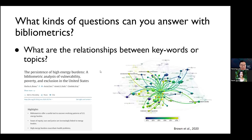Another question you might ask with bibliometrics is: what are the relationships between keywords or topics? The example shown is about the persistence of high energy burdens, using bibliometric analysis. On the right-hand side, you can see a visual network diagram connected by nodes and lines showing relationships between keywords and topics. The highlight from this screenshot is that bibliometrics offer a useful tool to uncover evolving patterns of US energy burden.